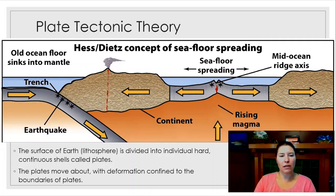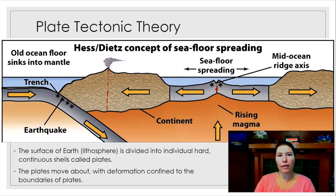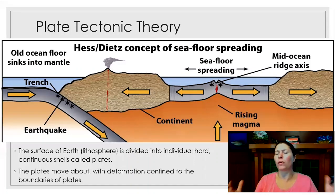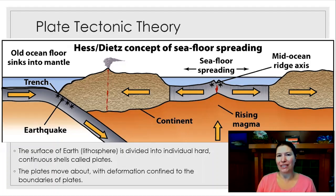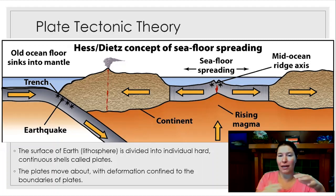Plate tectonic theory is all about the idea that the surface of the earth—our lithosphere or crust—is divided into individual, hard, continuous plates, like shells. We can think about the whole lithosphere or crust as like the eggshell around the earth: it's brittle, it's hard, it breaks easily. When we're talking about the earth itself pushing stuff around, the crust is very brittle.